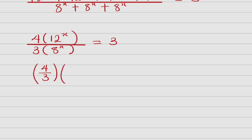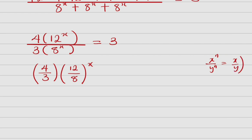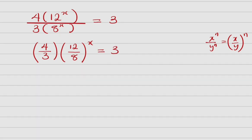We can write this as 4 over 3, and then 12 over 8, all raised to power x, equals 3. Remember the indices rule: if you have x raised to power n and y raised to power n, provided the powers are the same, you can write it as (x over y) raised to power n. That's the conclusion here.